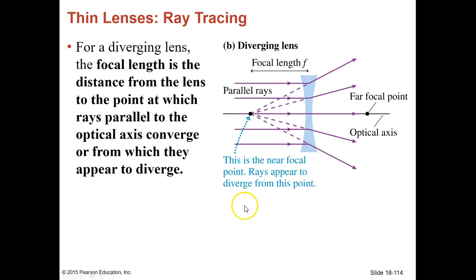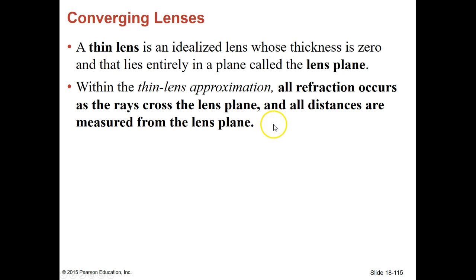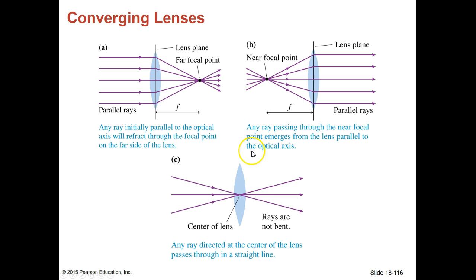For a diverging lens, the focal length is the distance from the lens to the point at which the rays parallel to the optical axis converge, or from which they appear to diverge. A thin lens is an ideal lens where the thickness is zero, and it lies entirely in the lens plane. We can use this thin lens approximation to look at any type of lens, as rays cross the lens plane, and all the distances are measured from that lens plane itself.